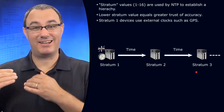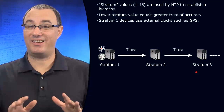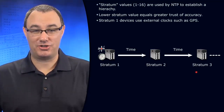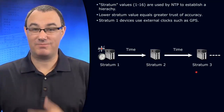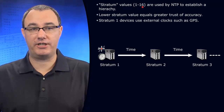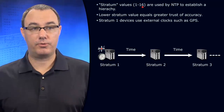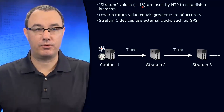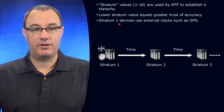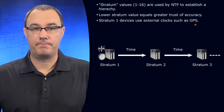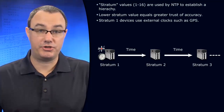Unless your internal time source actually is an atomic clock, you'd override that recommendation. The stratum values range from one through sixteen — lower is more trustworthy, meaning fewer hops from the time source. Stratum level one, for instance, would be associated with things like GPS.